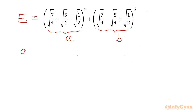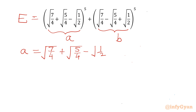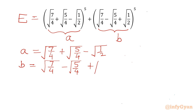Let us write: A is equal to √(7/4) + √(5/4) − √(1/2). Similarly, B is equal to √(7/4) − √(5/4) + √(1/2).